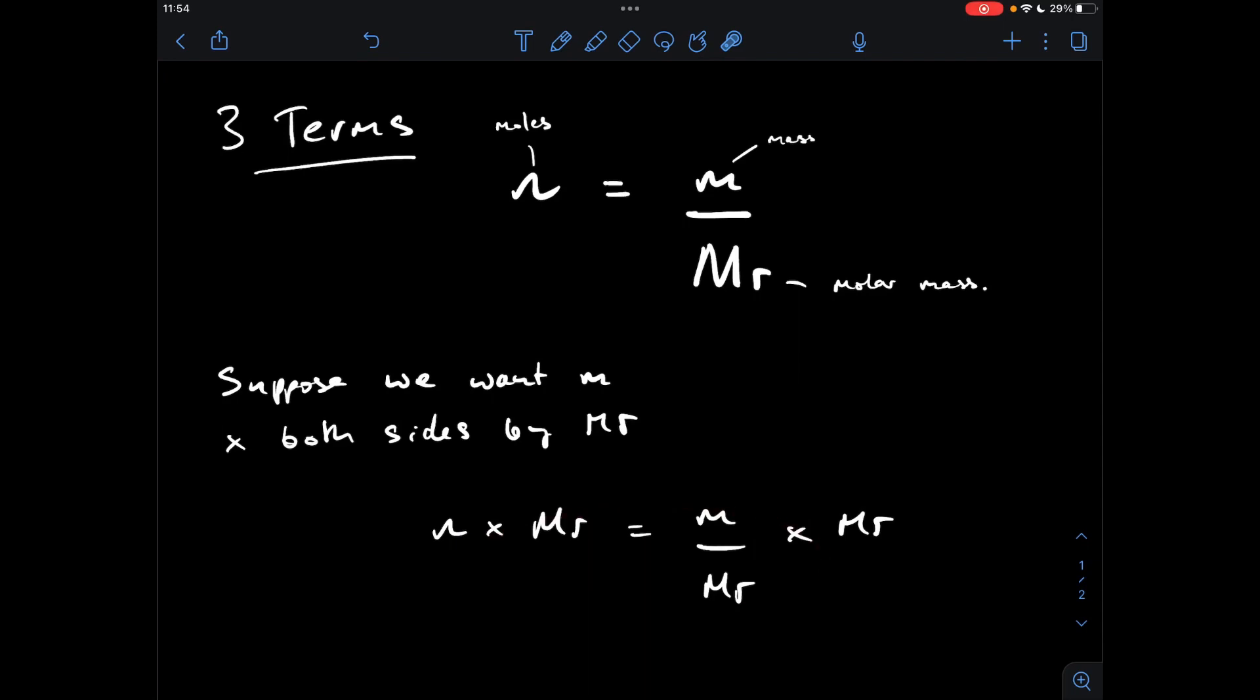So that's what the equation becomes, so n times Mr equals m over Mr times Mr, so we've multiplied both sides by Mr, and the purpose of doing that is it enables us to cancel out the Mr terms on the right hand side, which obviously just leaves m on its own. So that means that m equals n times Mr.